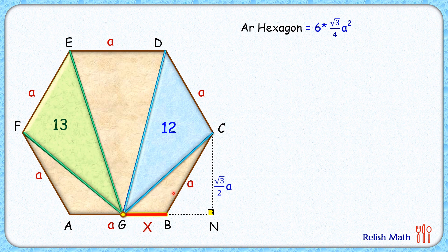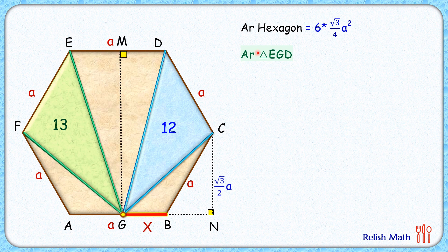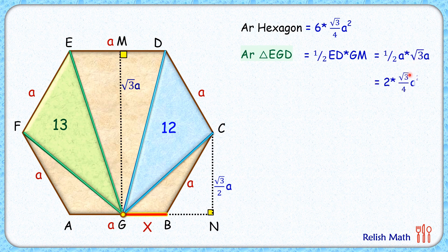The area of the three brown triangles is half the area of the hexagon. For triangle EGD, its area is half of base times height. Drawing height GM, the base ED has length 'a' and GM is twice CN, which is √3·a. So the area of EGD equals 2 times √3/4·a², equivalent to two equilateral triangles. The full hexagon is six equilateral triangles, so EGD equals two equilateral triangles in area.